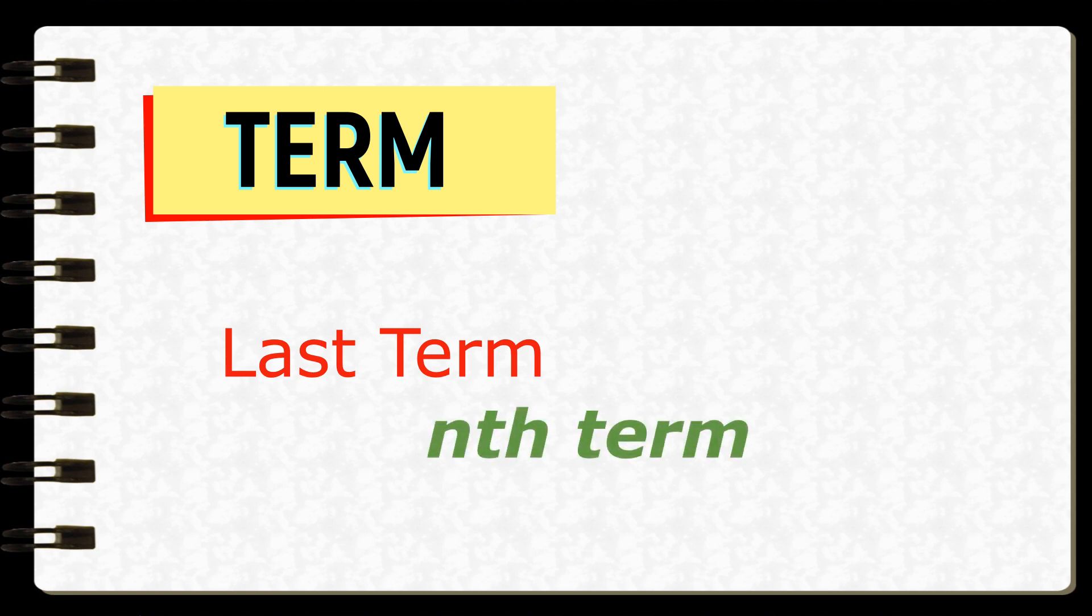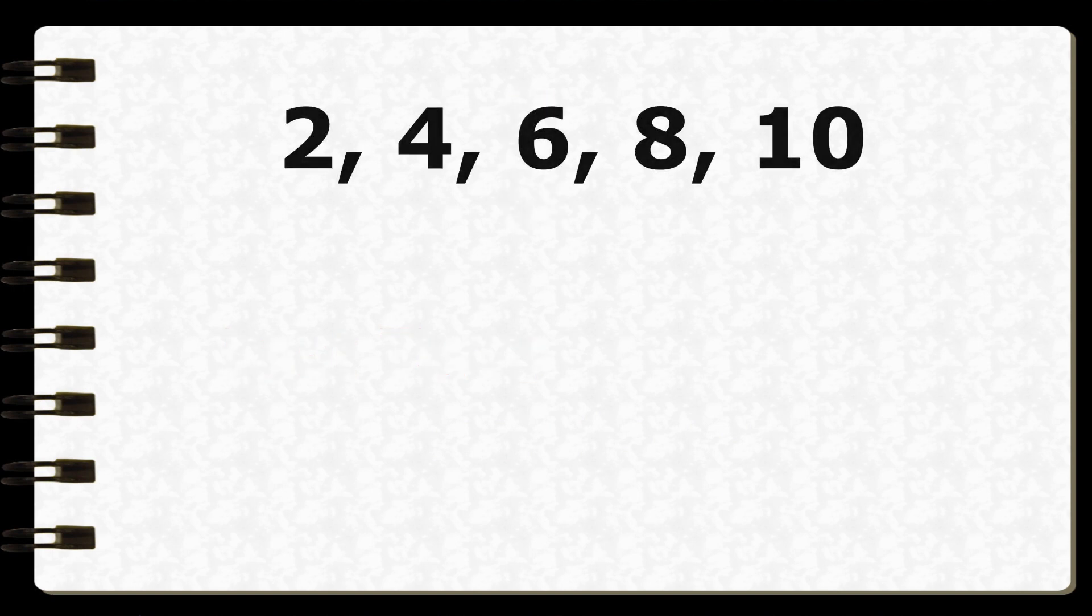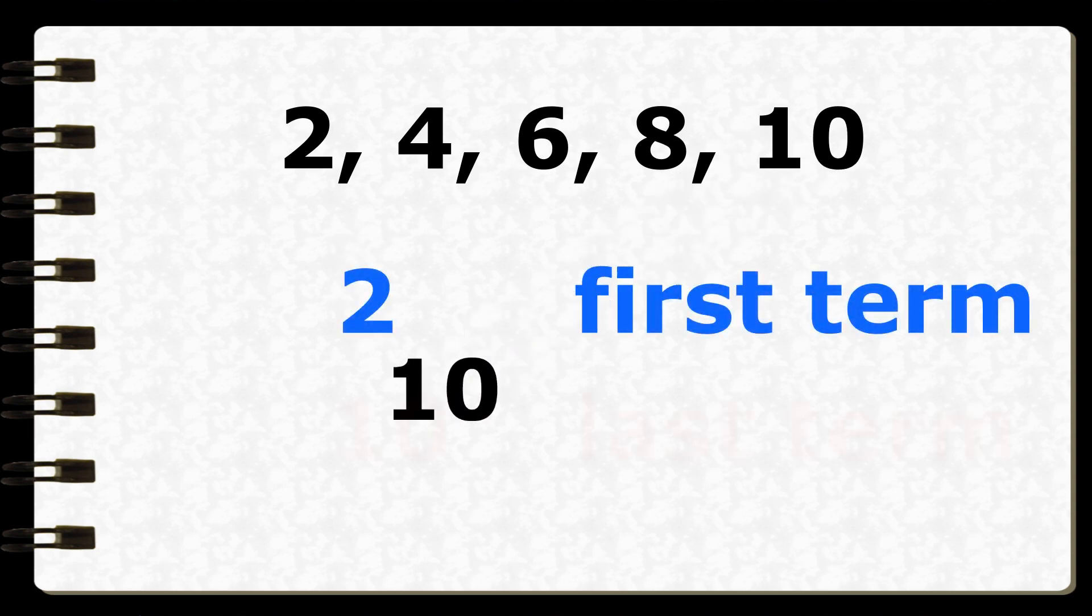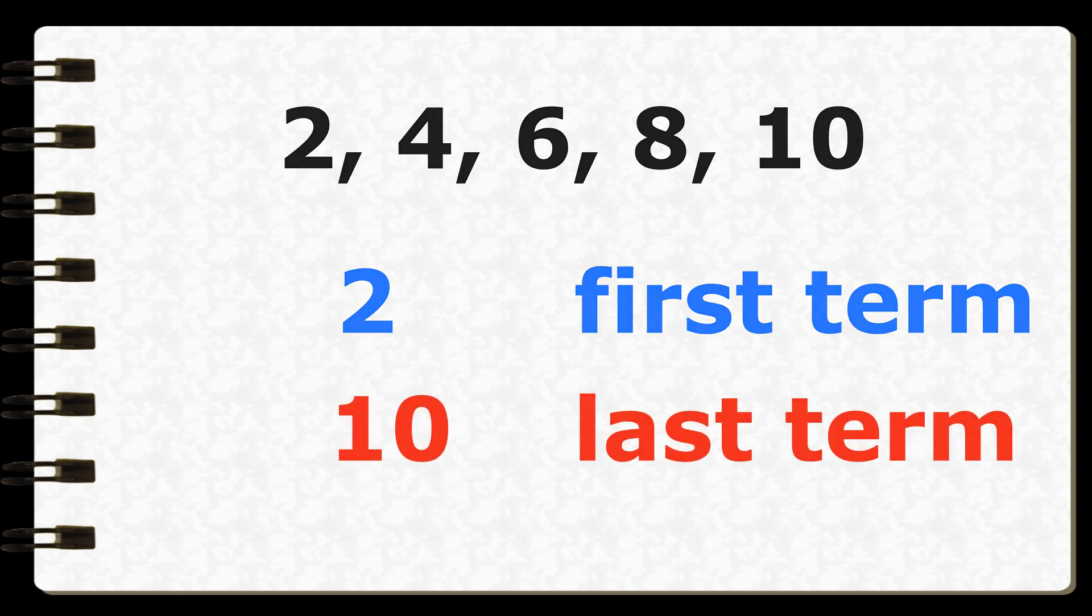Now, each member of a sequence is called term. So the first member is the first term. The last member is the last term. Mathematically, it is also called the end term. So let's have this sequence. In here, 2 is the first term. 10 is the last term. Get it?